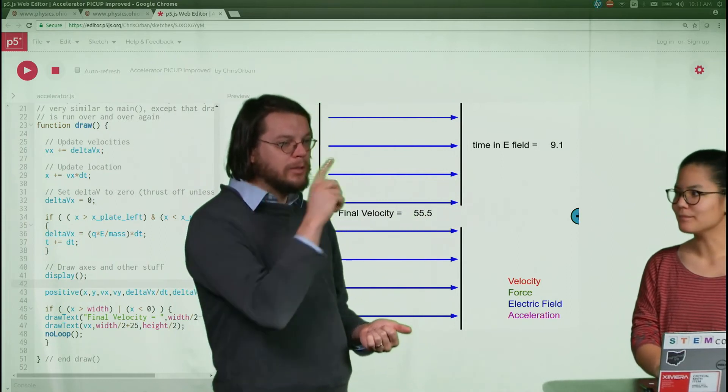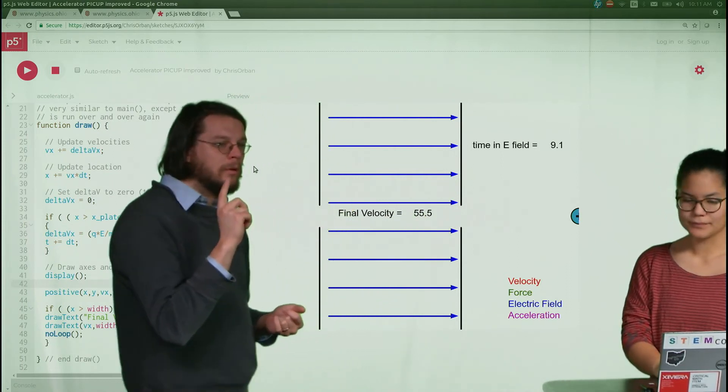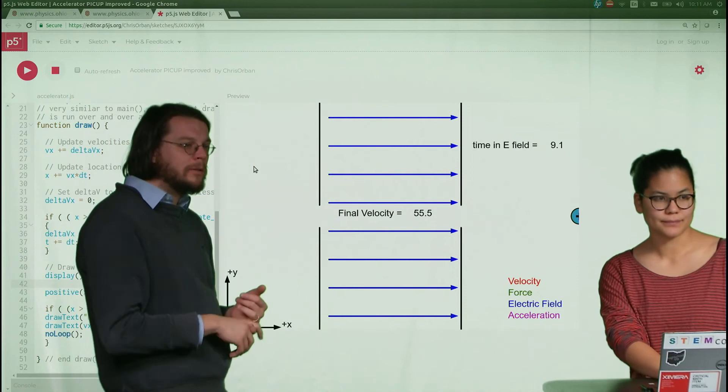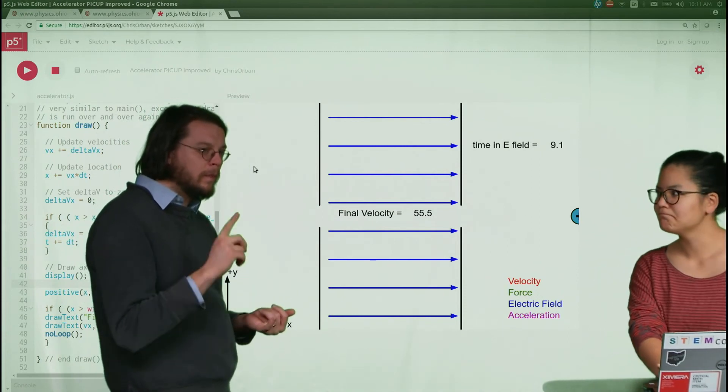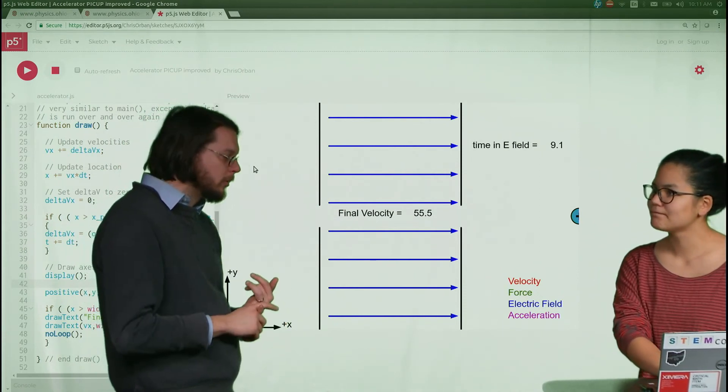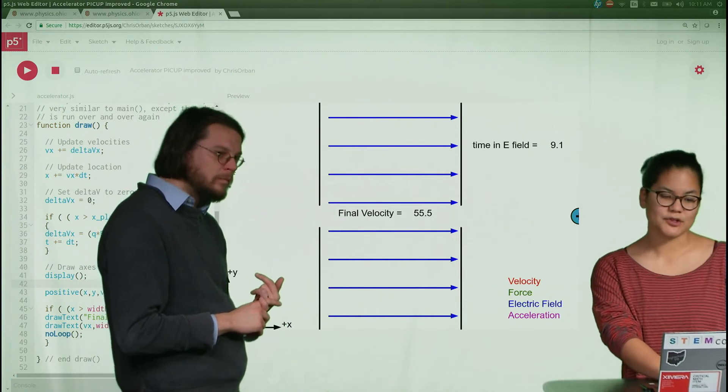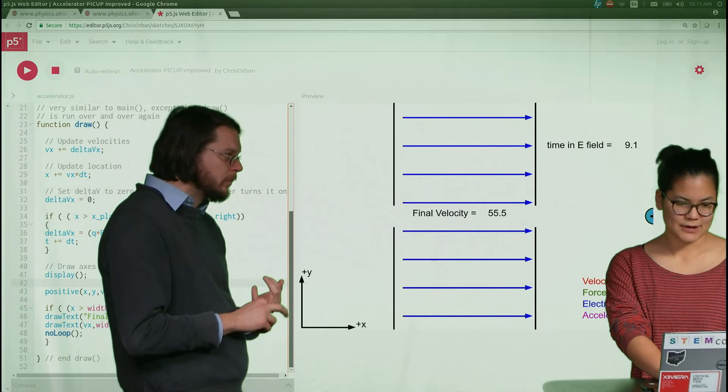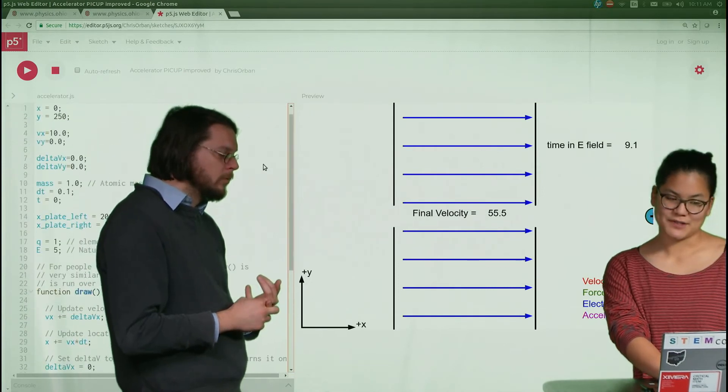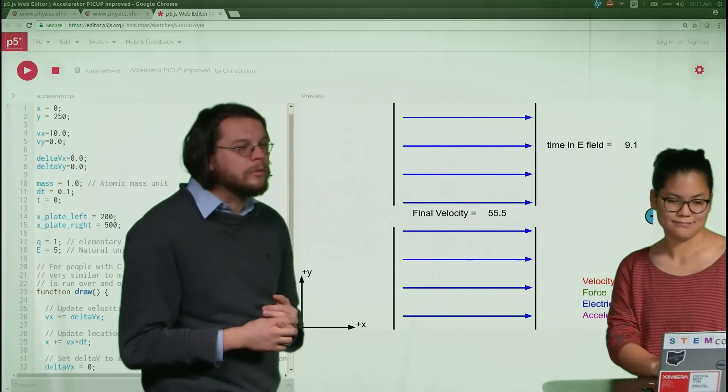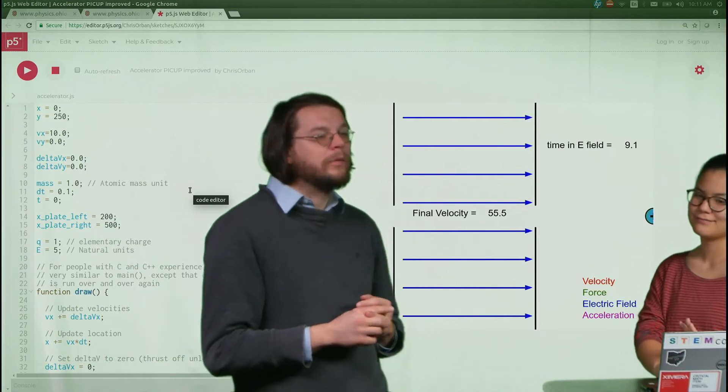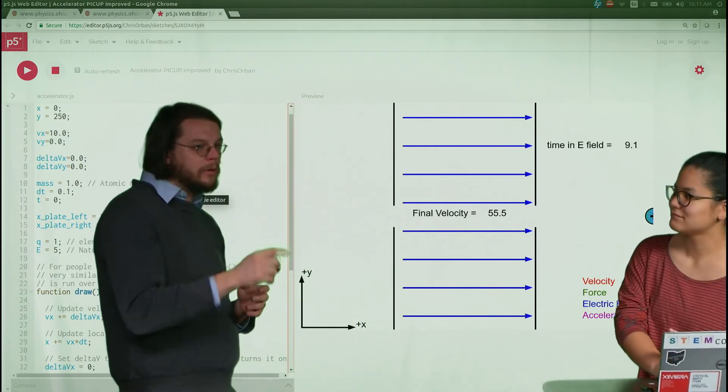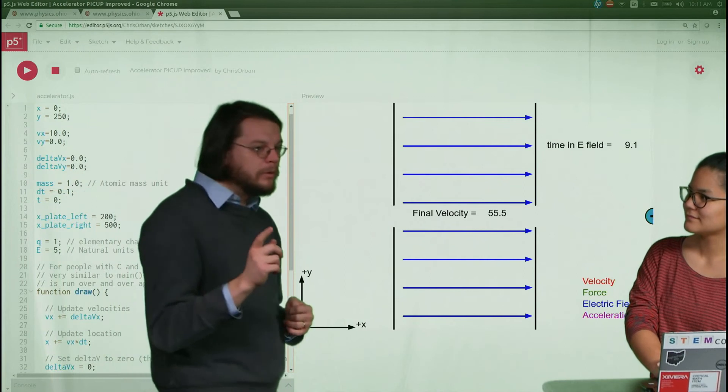So it was 9.1 seconds in the field. What was the charge of the particle? I think just plus one. What was the mass of the particle? One atomic mass unit. And what was the field? Five. Now in a second we're gonna jump to the glass board.